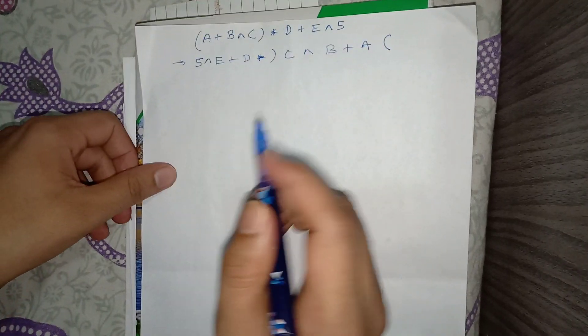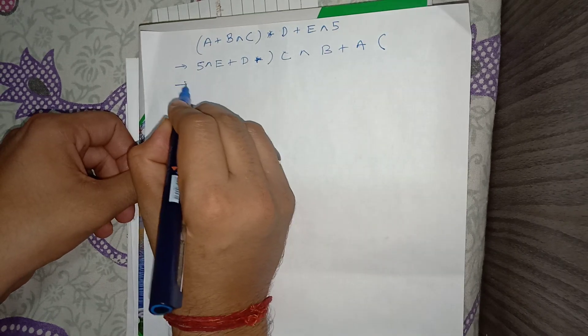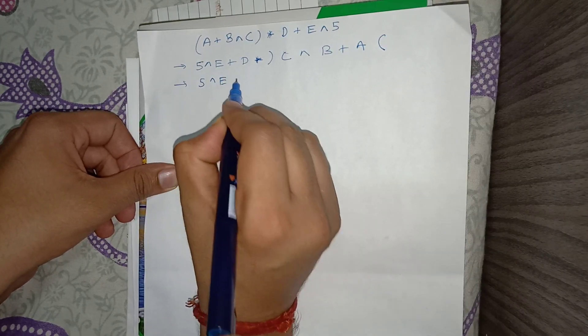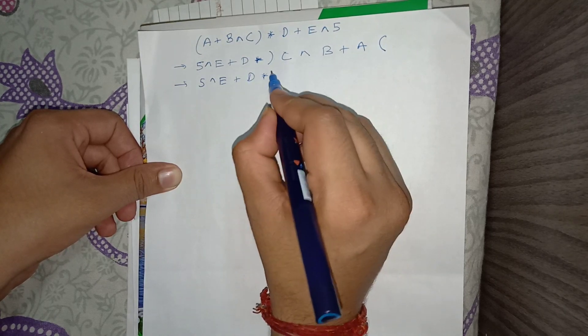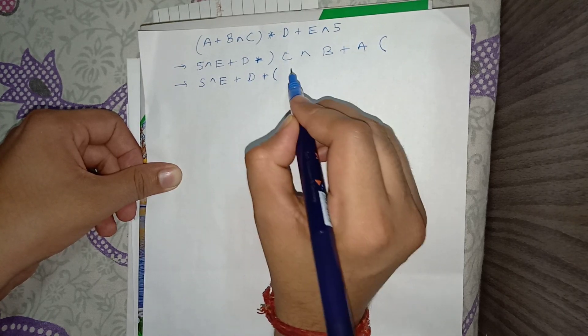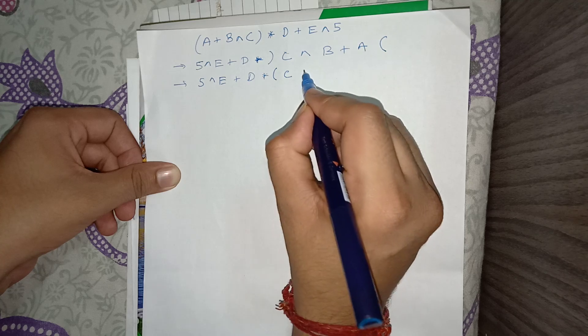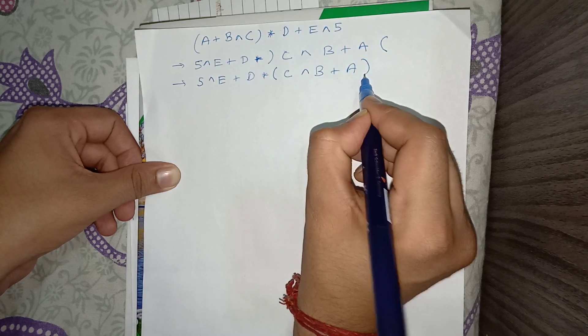The second step is to make every opening bracket a closing bracket and every closing bracket an opening bracket. So the brackets in the expression become their opposites.